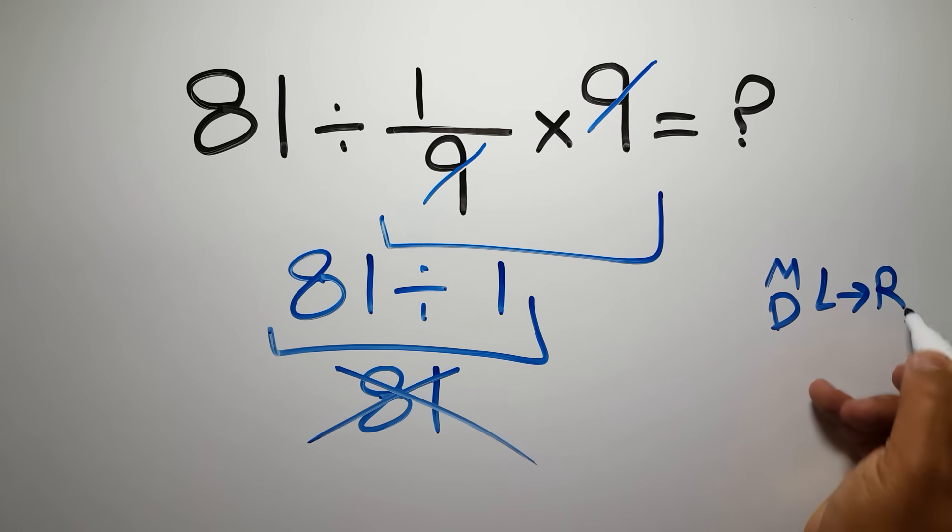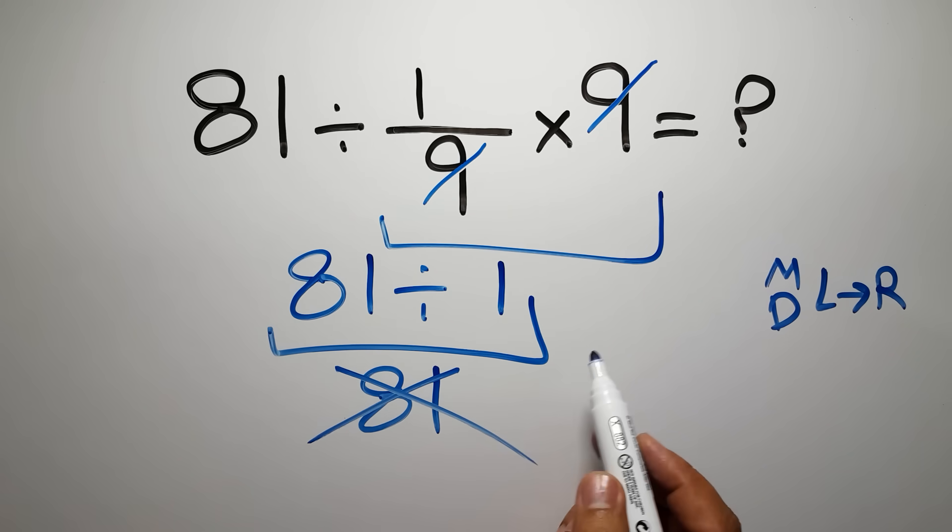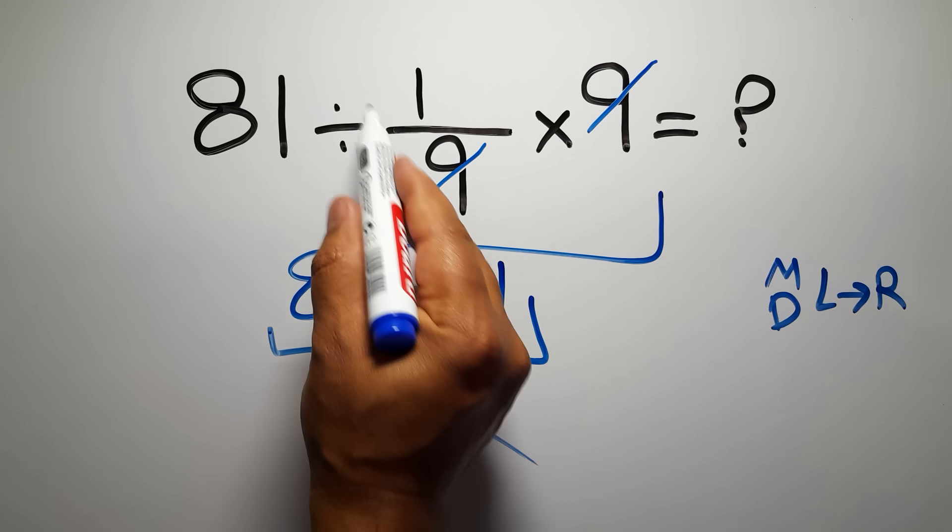And we have to work from left to right. So here first we have to do this division, then this multiplication. If we do this multiplication before this division, it is wrong.